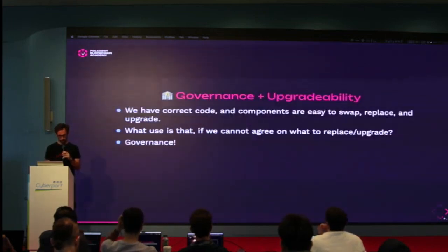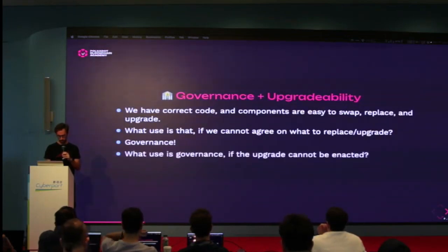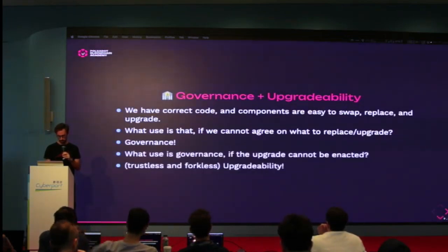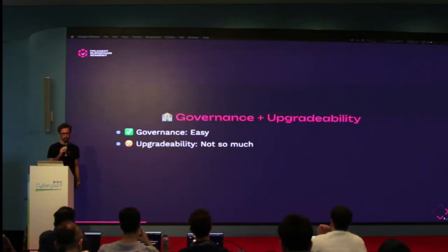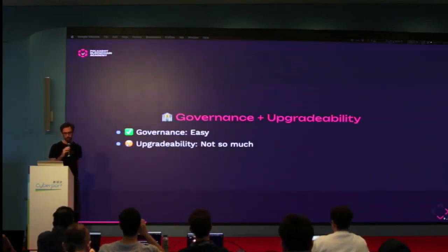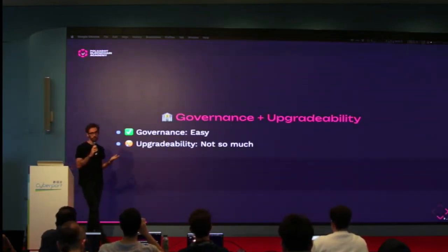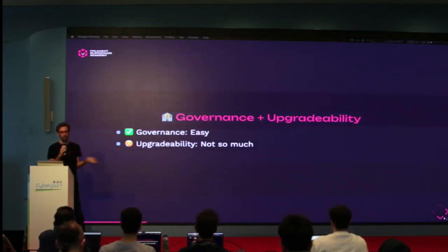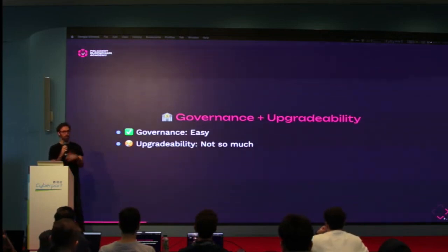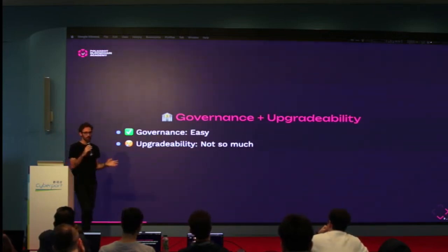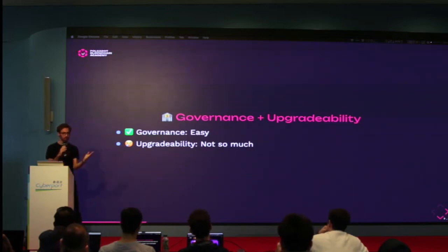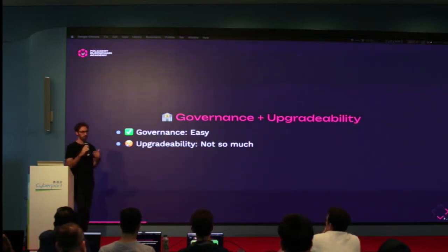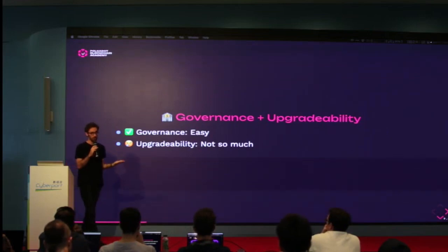Between governance and upgradeability, I'd argue governance is actually easier. There are many ways to have on-chain or off-chain voting systems — people vote based on their token, ranking, or experience. You can tally those votes and eventually come to a decision. What's actually difficult is upgradeability.